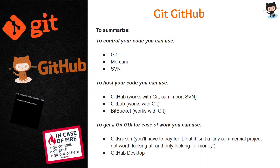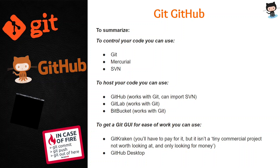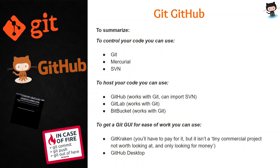To summarize: to control your code, you can use Git. To host your code, you can use GitHub, GitLab, or Bitbucket — we choose GitHub. Now to get a Git GUI so that you can work easily — instead of writing Git commands like git push and git pull, if you want to push your project with just a single click, you use a GUI, that is a graphical user interface. For that, you have GitKraken and GitHub Desktop. GitHub is the most used tool by many users, so we're going to use GitHub.